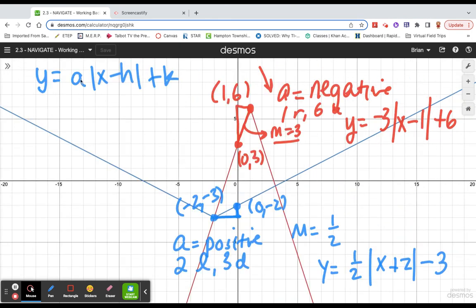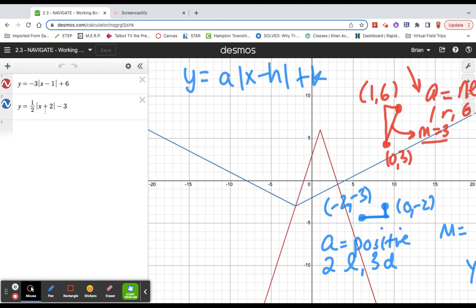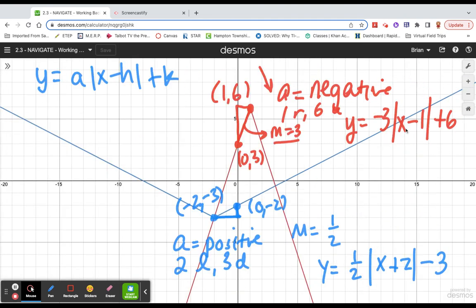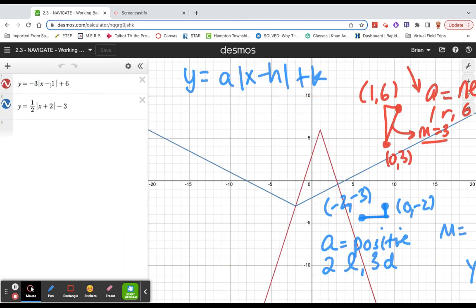So we have 1 half x plus 2 minus 3 for the blue graph. Negative 3 x minus 1 plus 6 for the red graph.